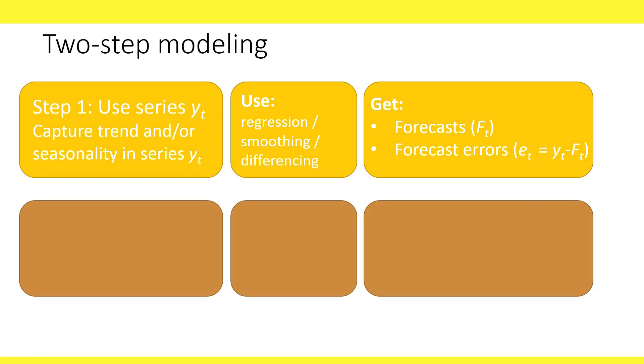Let's write the two-step approach using our forecasting notation so that it's clear how to generate forecasts and forecast errors. In step one, we start with the original series, denoted Y_t, and apply any method that can capture trend and/or seasonality. The result from this step is a set of forecasts, F_t, and forecast errors, E_t.